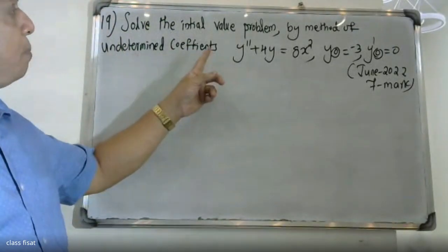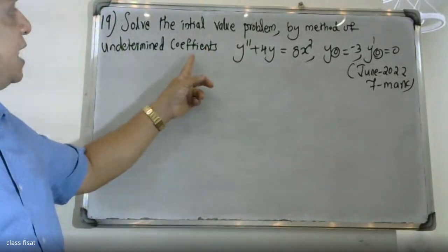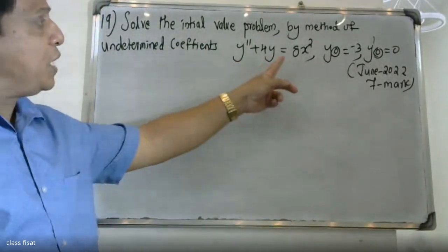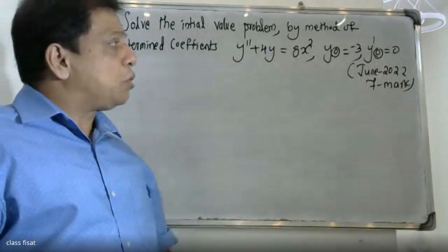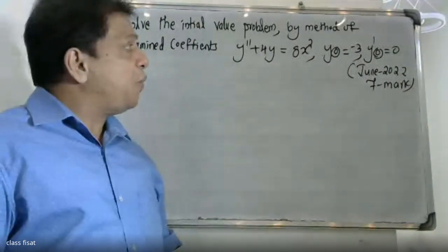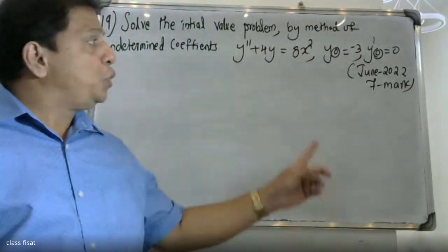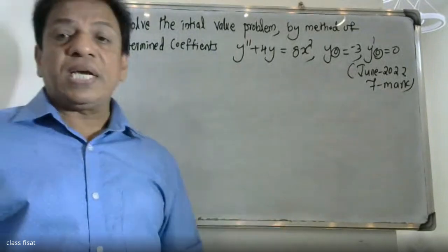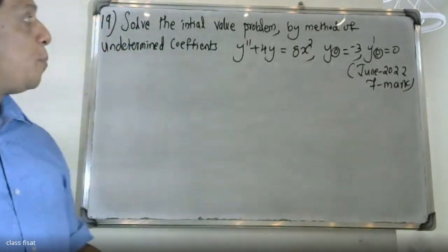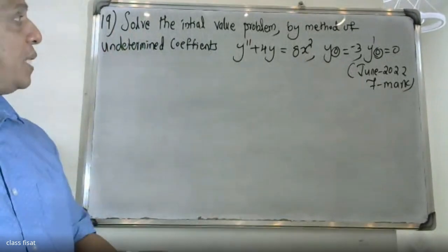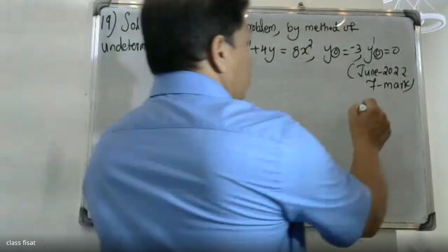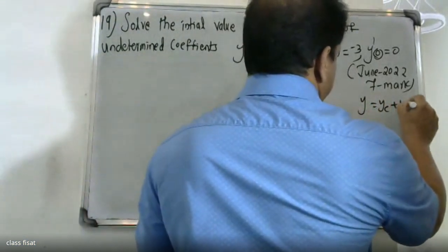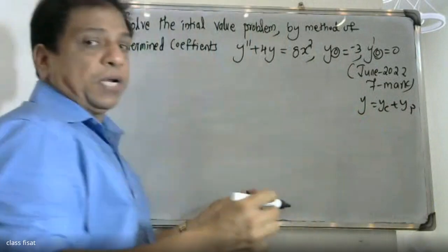Solve the initial value problem by the method of undetermined coefficients: y'' + 4y = 8x², where y(0) = -3 and y'(0) = 0.